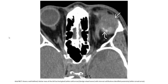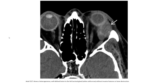On axial non-contrast CT, there is a well-defined globular mass of the left lateral fossa, indicated by the white arrow, with mixed attenuation and internal calcification identified posteriorly, indicated by the curved arrow. The axial contrast CT shows a heterogeneous, well-defined mass in the left lateral fossa, without invasive features or bone destruction.